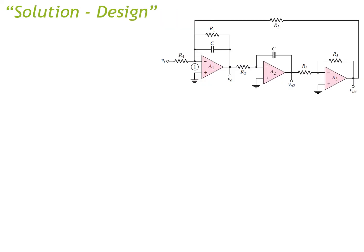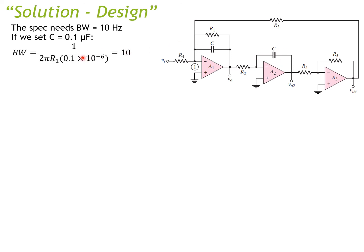Now that we have expressions for all the specifications, we can choose component values to meet the requirements. Moving to the design process: our specification requires a bandwidth of 10 hertz. First, set the capacitor C to a common value of 0.1 microfarads, then apply the bandwidth expression set equal to 10.